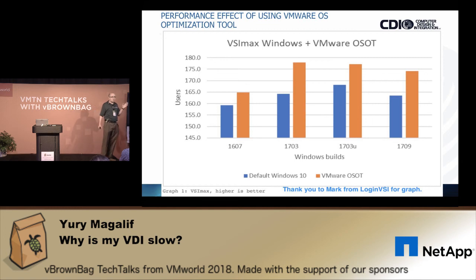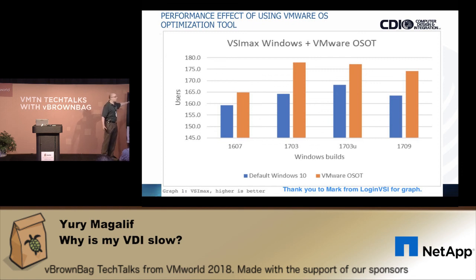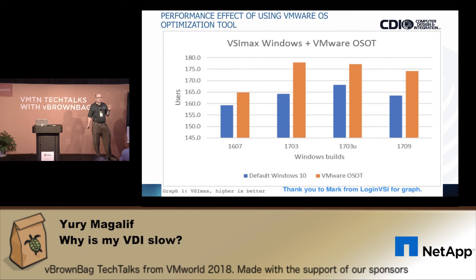Finally, you can optimize your image for VDI. Thanks to Login VSI, they ran a comparison of Windows 10: the default Windows is blue, the optimized Windows is orange. Using the VMware OS Optimization Tool, you can host significantly more Windows desktops on the same machine. Please use that tool — it gives you a good performance boost. These are the main metrics and optimizations for VDI end-user experience. If you apply these optimizations, you will never get the question 'Why is my VDI slow?'